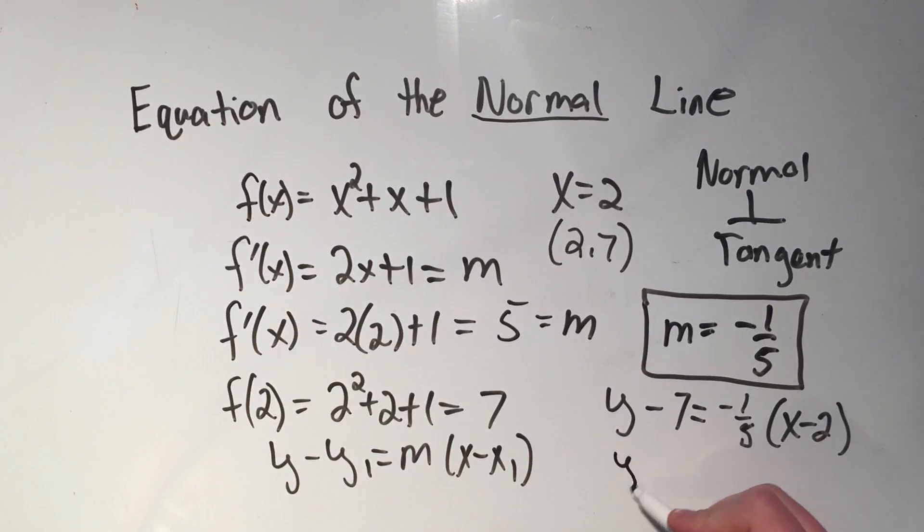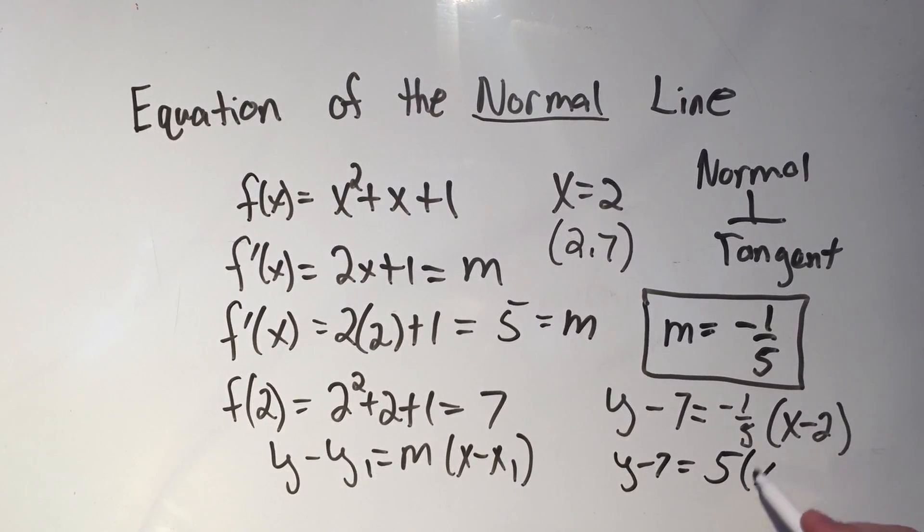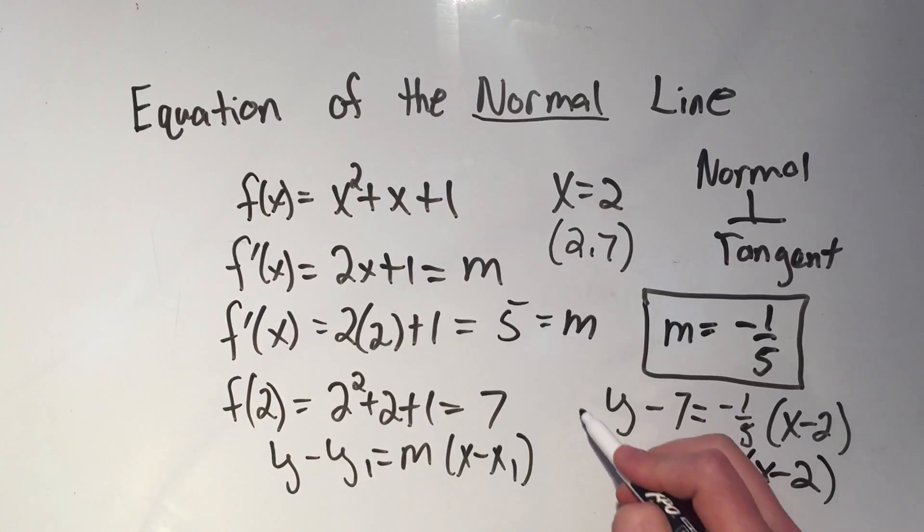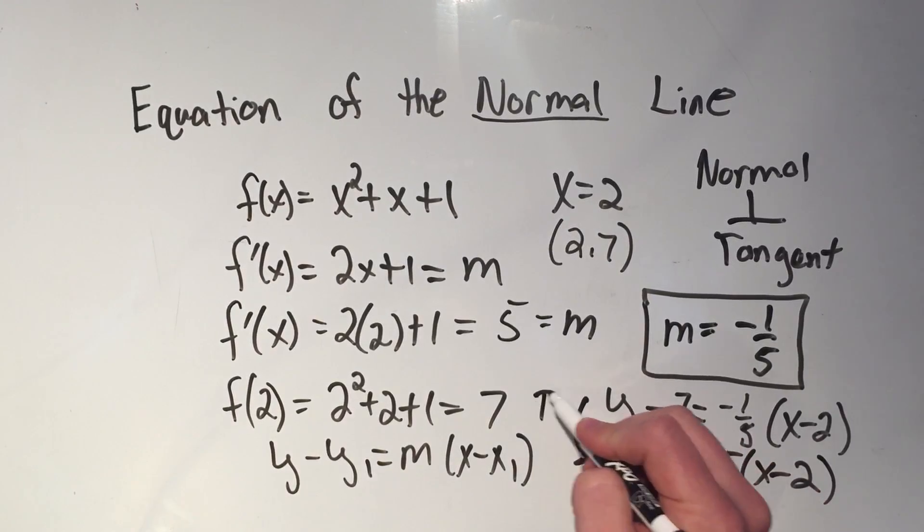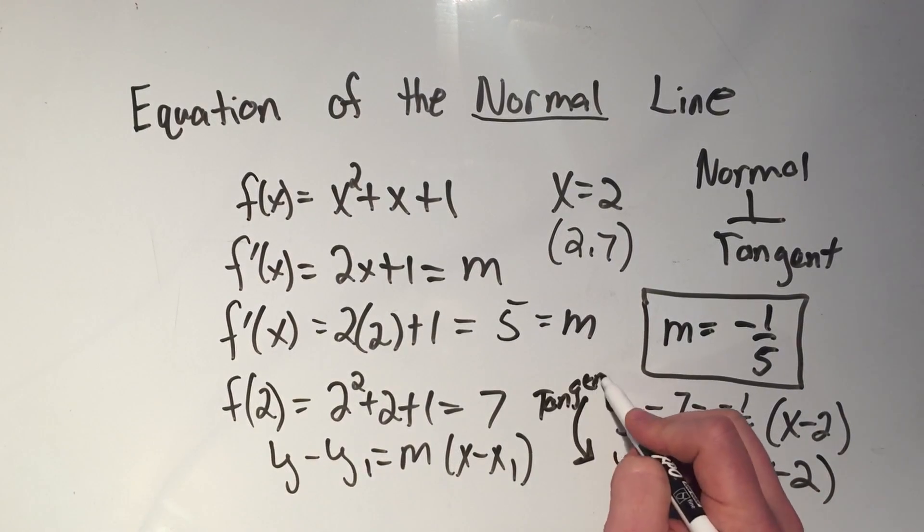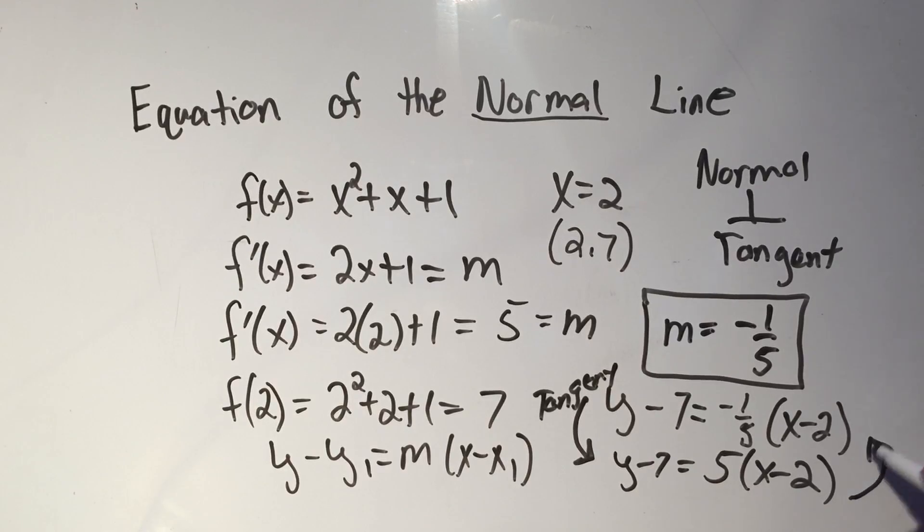And if you wanted to change this to the equation of the tangent line, you could just take the negative reciprocal slope. You could just make that a 5 again, and vice versa. So this is how you would go to the tangent line. This is how you would get to the normal line.